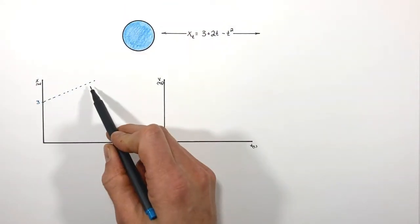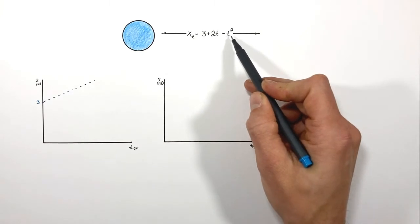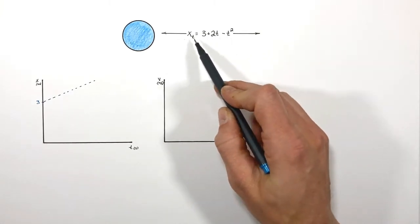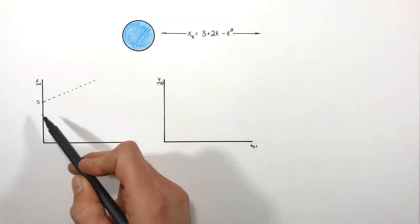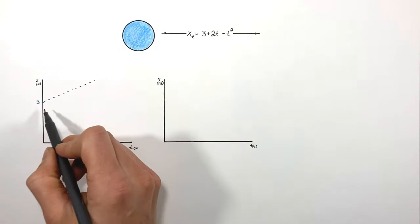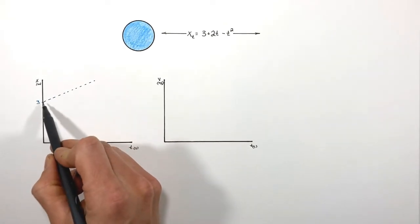But there's a negative t squared here, and mathematically really what this is doing is turning this whole function into a parabola, or really a parabola that's upside down or concave down.